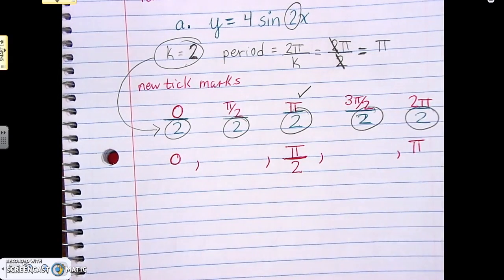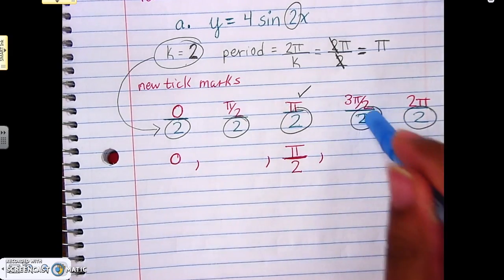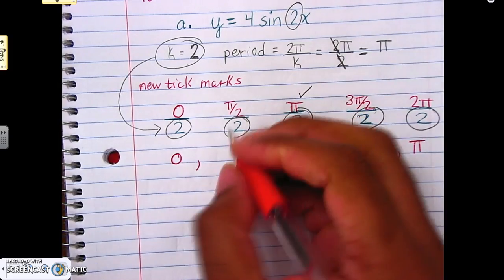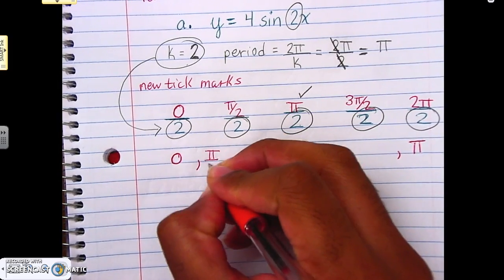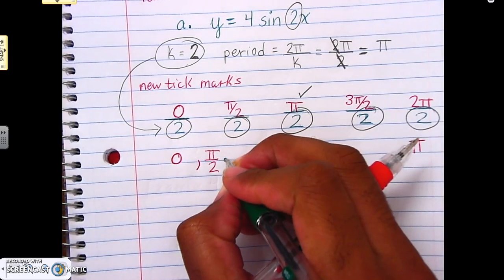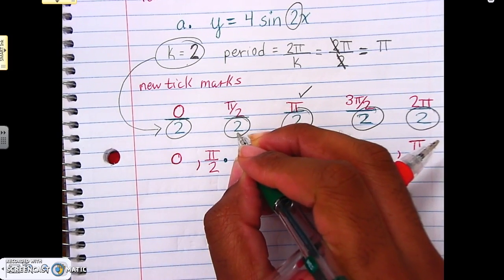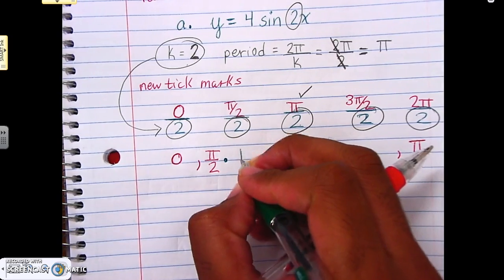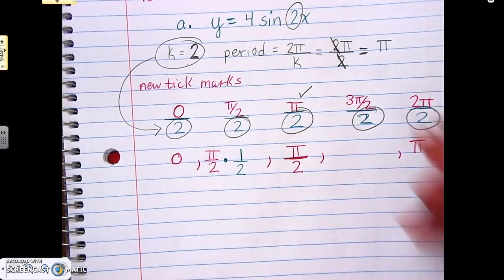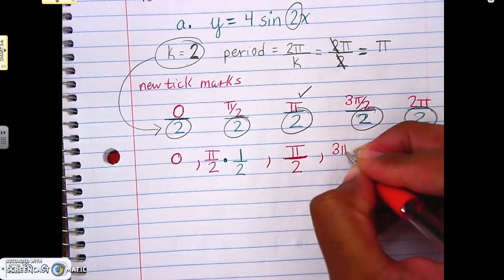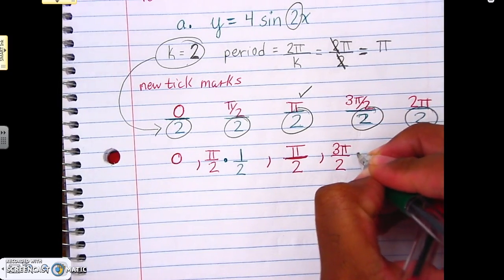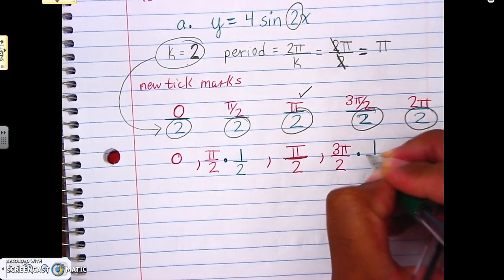Alright, and again here, these parts we're going to have to do keep change flip. So let's do keep change flip here, so we keep that π over 2, we change the division to multiplication, and then we flip 2, which makes it 1 over 2. Same thing here, 3π over 2, we divide, change the division to multiplication, and we flip the 2, so 1 over 2 again.